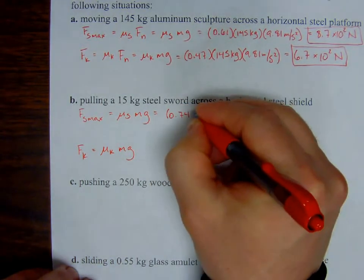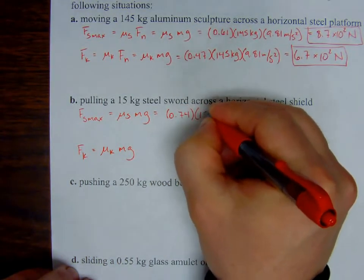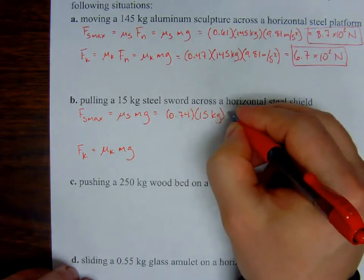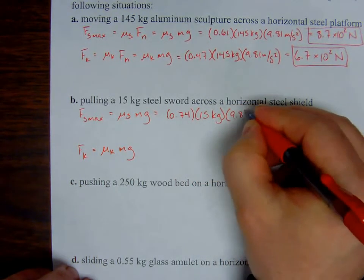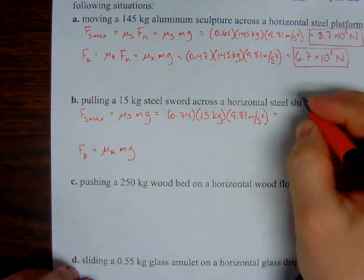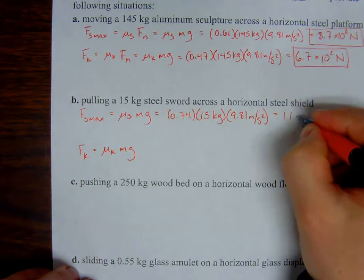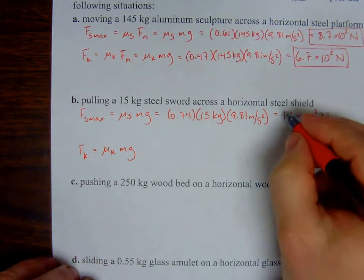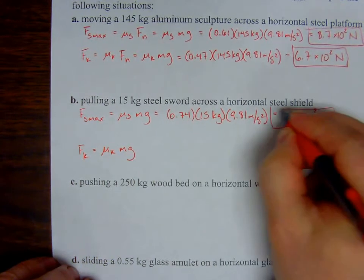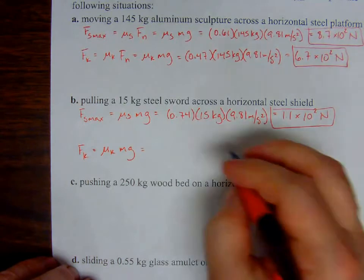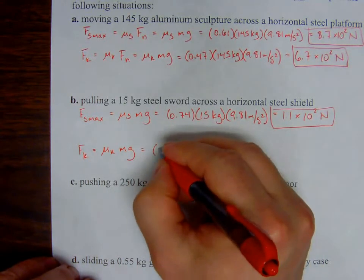Alright, on to kinetic, referring to the table, 0.57, again, multiplied by 15 kilogram mass, acceleration due to gravity, but in the opposite direction, and I'm going to go with, again, two sig figs, there's a thing here, 84 newtons, moving on to C.